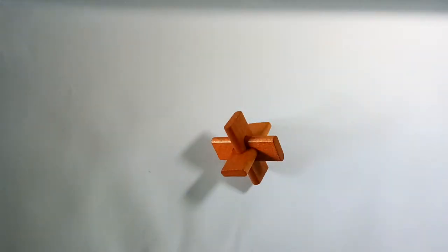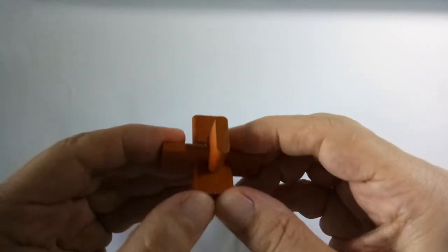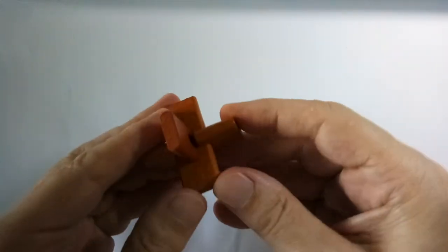And there you go. The 3D wooden cross. How do you take it apart? You just take it in your hands and you try to push the edges. Any edge.